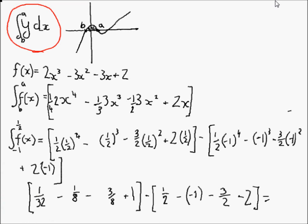And this is equal to 81 over 32 — a very nasty number — but it's also equal to 2.53125. And that's definite integration for you, with limits a and b, finding an area enclosed by a curve and the x-axis.